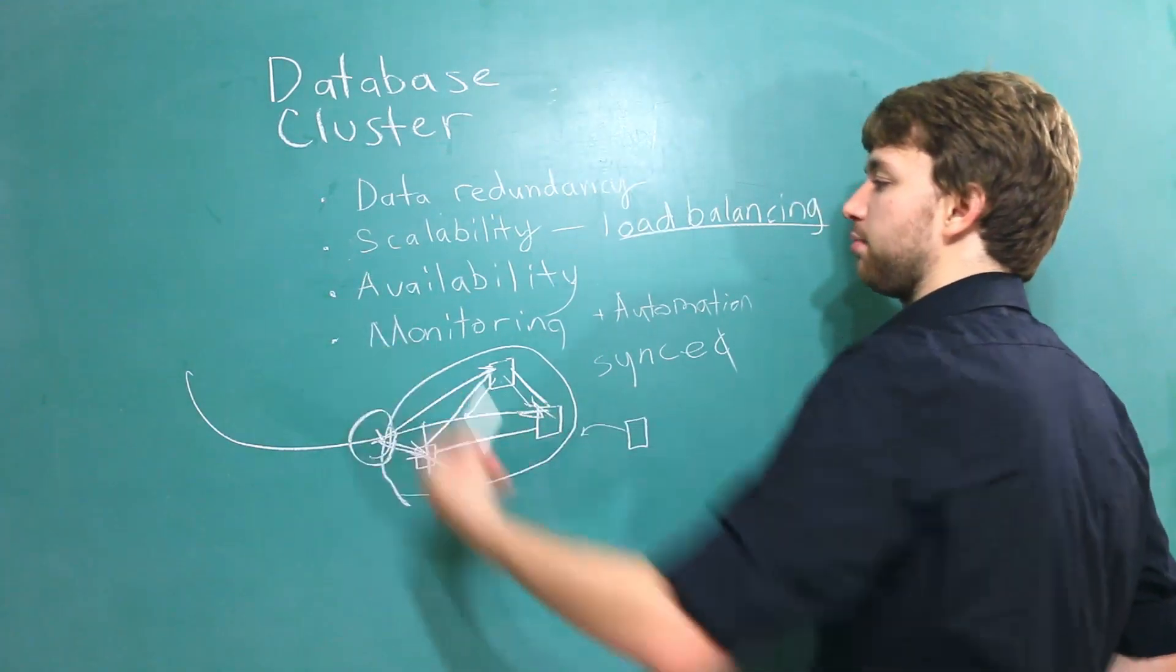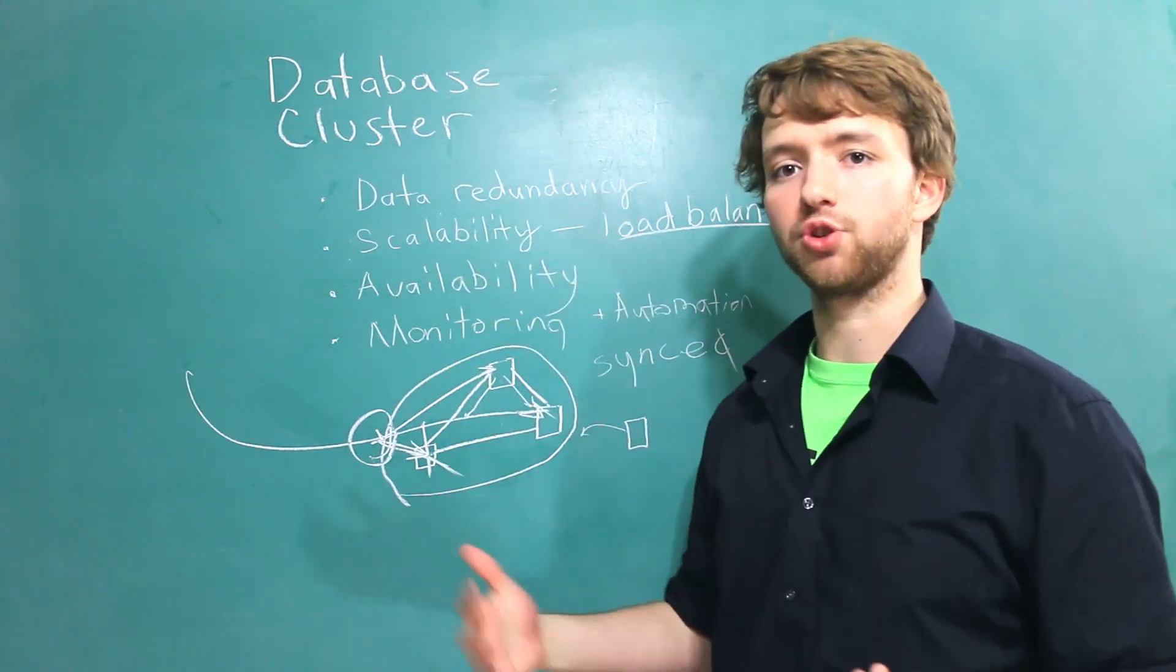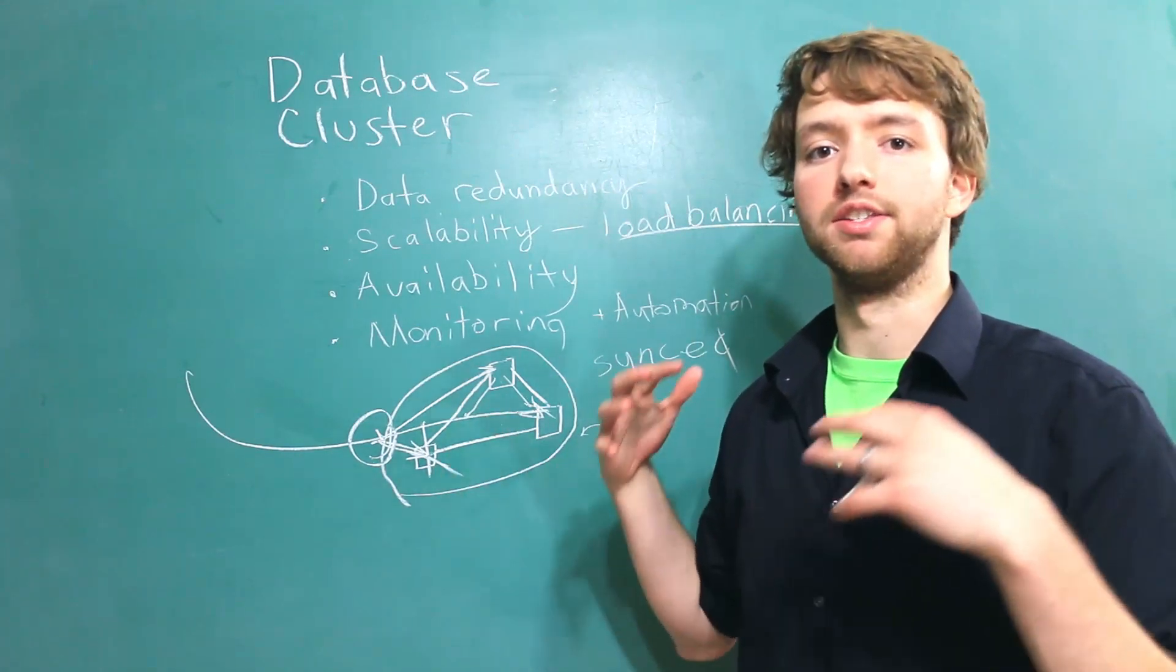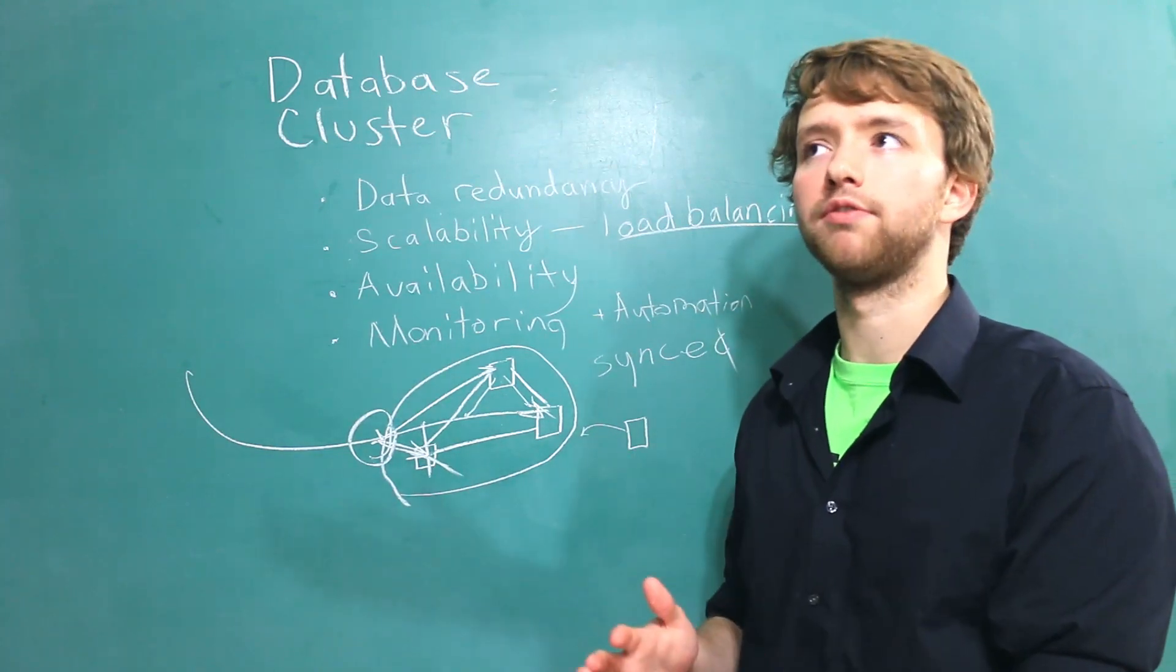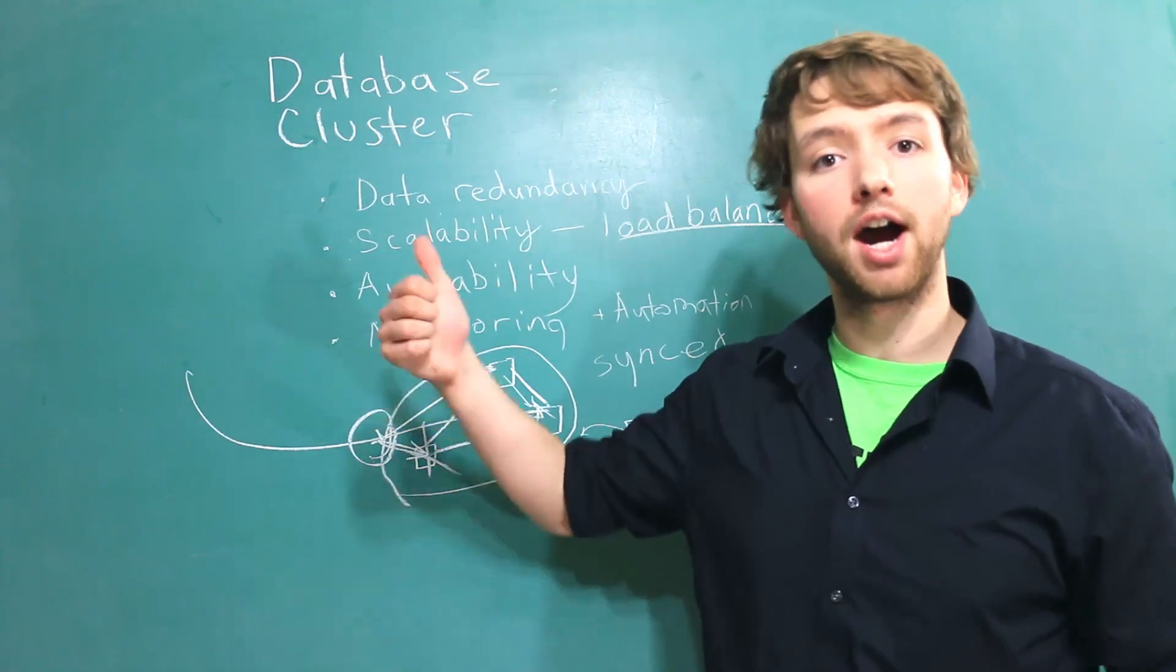Scalability and availability go hand in hand. Essentially, what availability is, is how much or how often your application or your database is available. How often are you able to use it? And how often is it broken? We want the availability to be as high as possible.